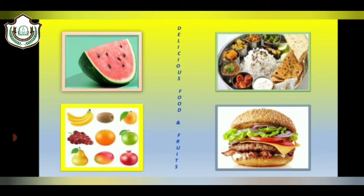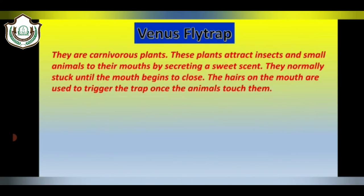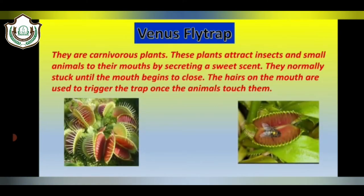The first plant I would like to tell you about is Venus Flytrap. They are carnivorous plants. These plants attract insects and small animals to their mouths by secreting a sweet scent. They normally stalk until the mouth begins to close. The hairs on the mouth are used to trigger the trap once the animals touch them.